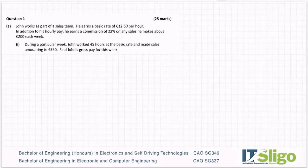Question one on paper one. John works as part of a sales team. He earns a basic rate of €12.60 per hour. In addition to his hourly pay, he earns a commission of 22% on any sales he makes above €200 each week. During a particular week John worked 45 hours at the basic rate and made sales amounting to €350. Find John's gross pay for this week.